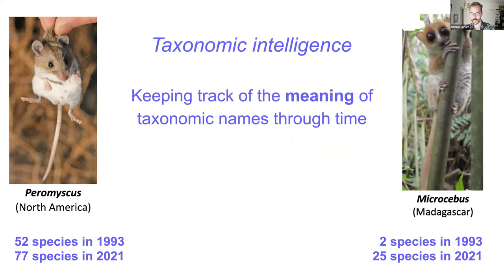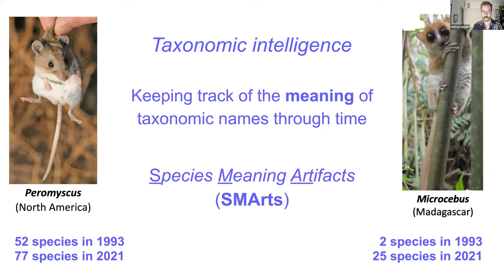Some cute mammals here to ground this work in real-world examples. The idea of taxonomic intelligence is one of the things we want to put forward — keeping track of the meaning of a given taxonomic name through time. The identical name can shift quite a bit; for example, Paramiscus as a genus has increased by 25 species, and Microcebus mouse lemurs show a lot of splitting and taxonomic change in meaning.